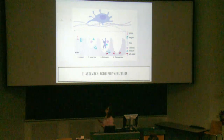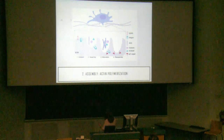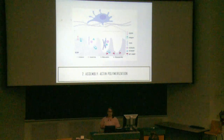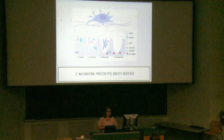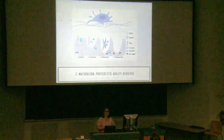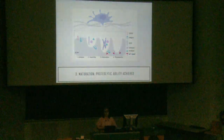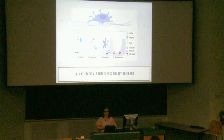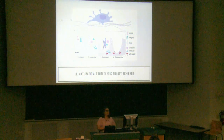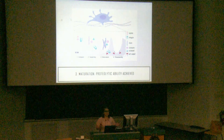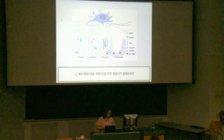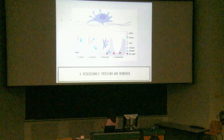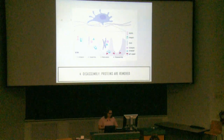The second step is assembly, where actin polymerization occurs through recruitment of proteins like cortactin and N-WASP. The third step is maturation, when proteolytic ability is achieved through recruitment of matrix metalloproteases like MT1-MMP, which degrade the surrounding extracellular matrix. The final step is disassembly, in which these proteins are removed and recycled.